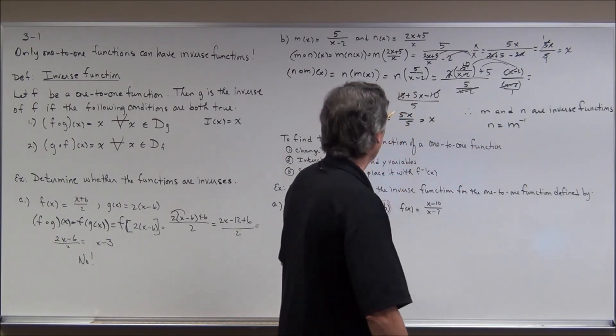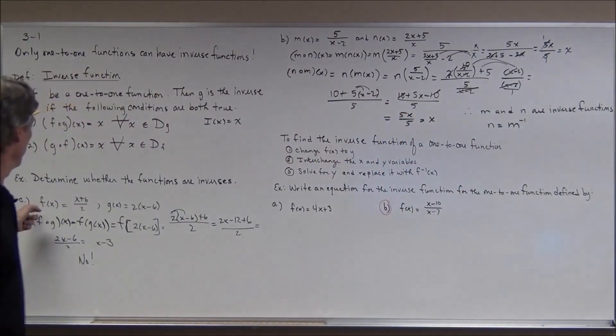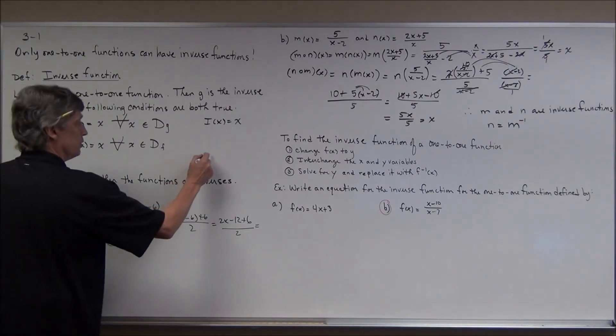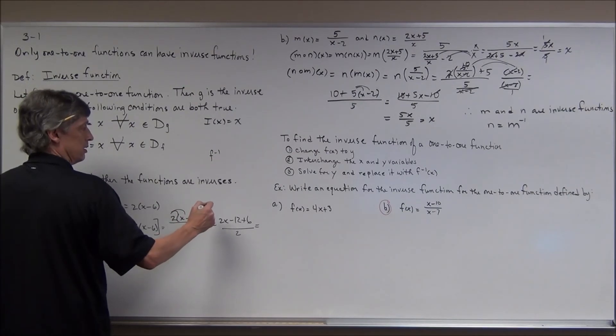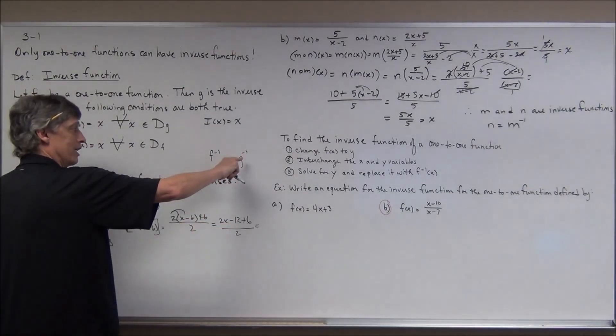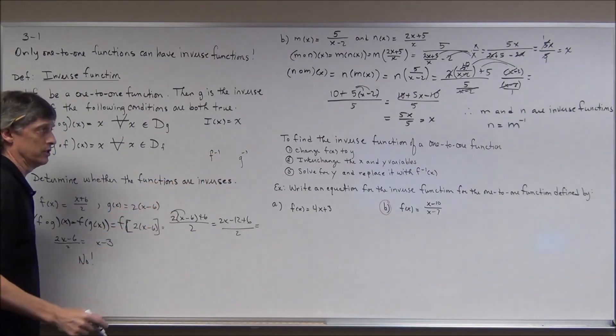Now, most of the time when we're dealing with functions, we use functions like F or G. So we'll use, for the inverse, we'll use F inverse or G inverse. Again, it's not a negative 1 exponent. It's just a notation for inverses.